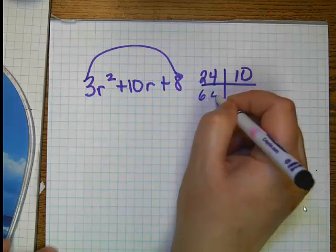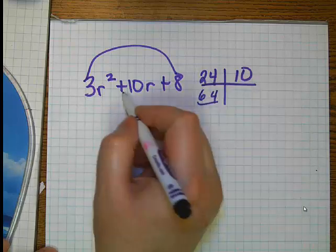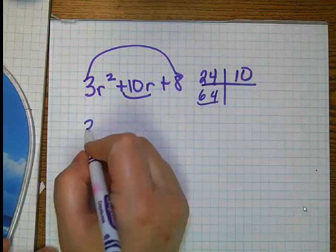So, let's do 6 and 4. And so what you're going to do is you're going to split the middle with the 6 and the 4.